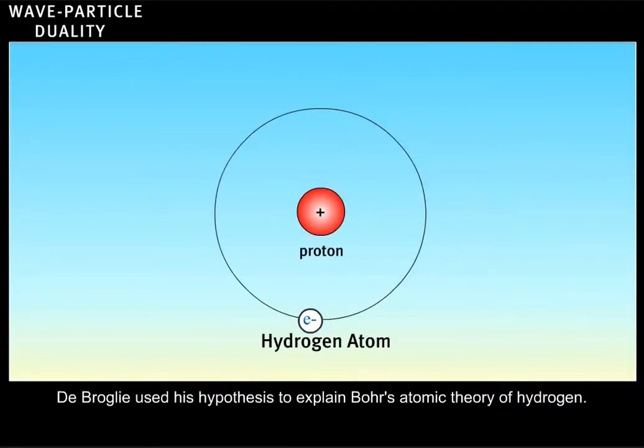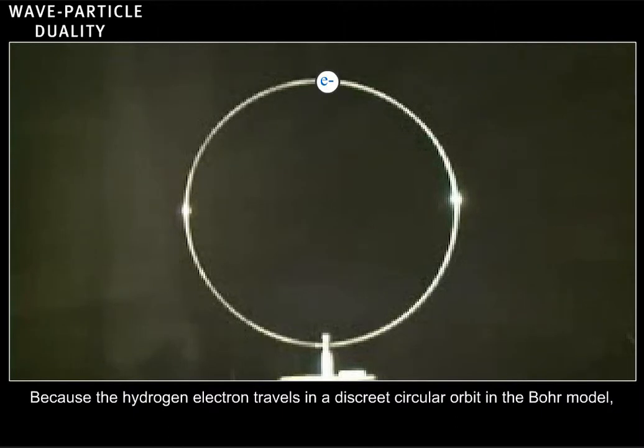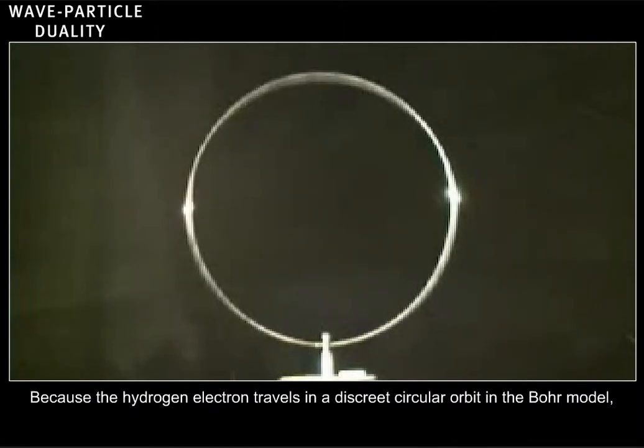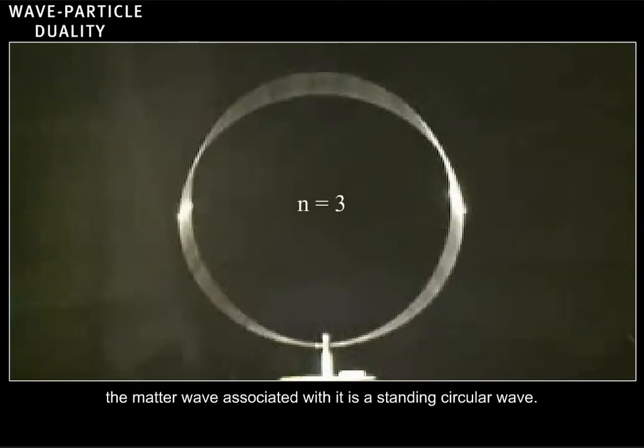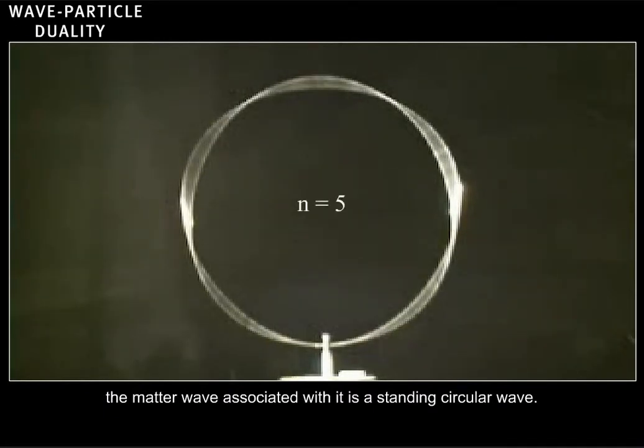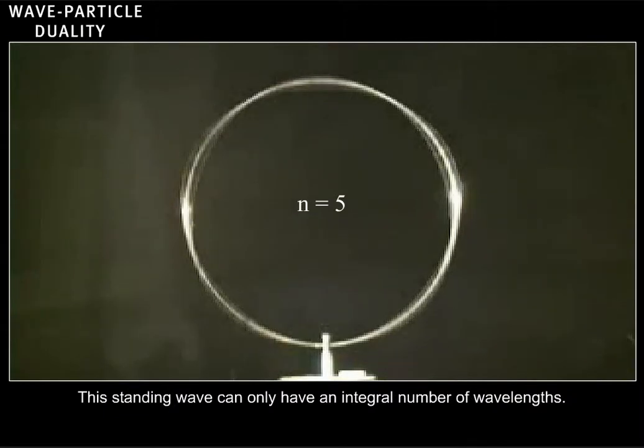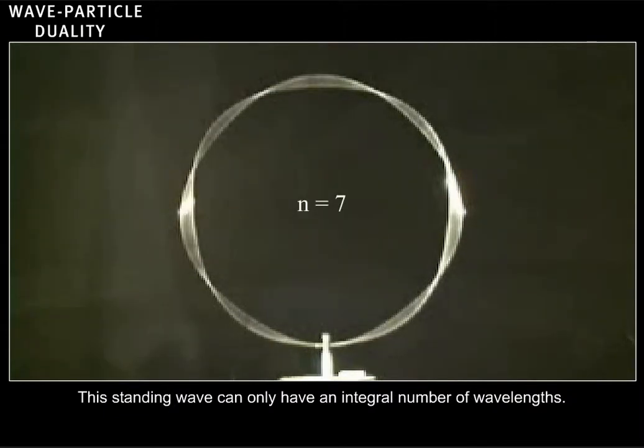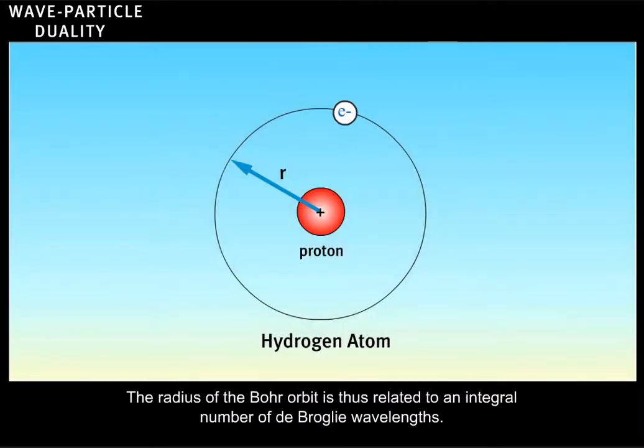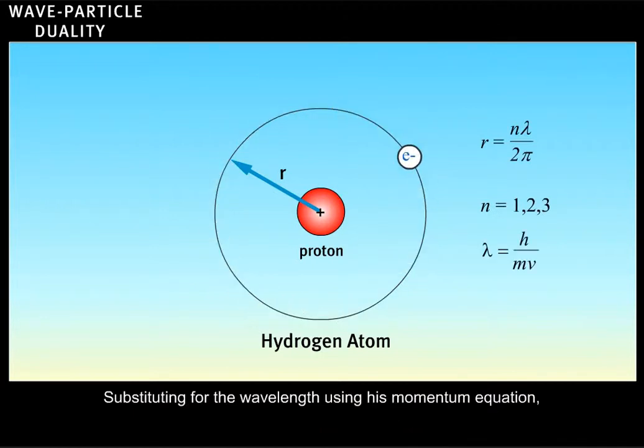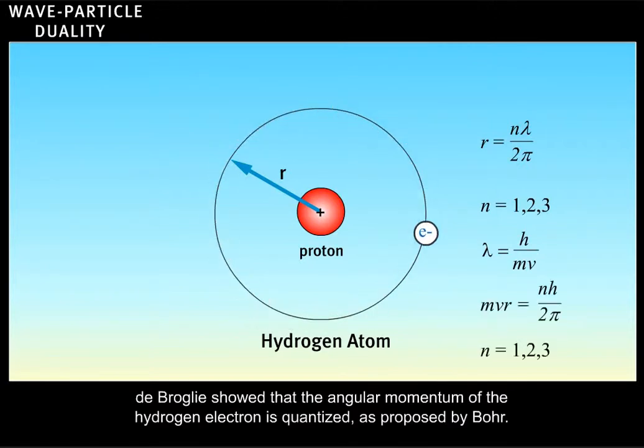De Broglie used his hypothesis to explain Bohr's atomic theory of hydrogen. Because the hydrogen electron travels in a discrete circular orbit in the Bohr model, the matter wave associated with it is a standing circular wave. This standing wave can only have an integral number of wavelengths. The radius of the Bohr orbit is thus related to an integral number of de Broglie wavelengths. Substituting for the wavelength using his momentum equation, de Broglie showed that the angular momentum of the hydrogen electron is quantized as proposed by Bohr.